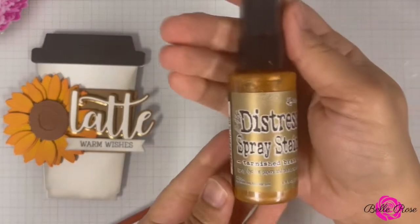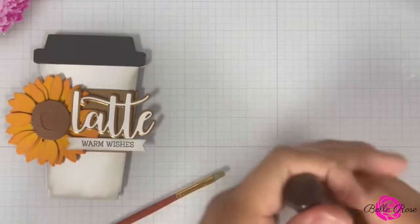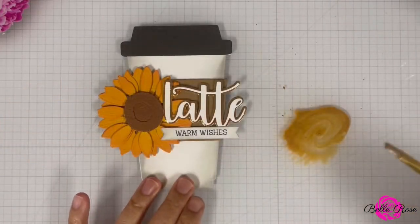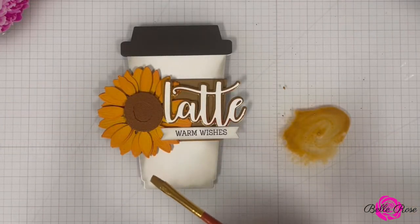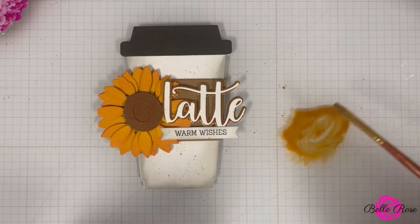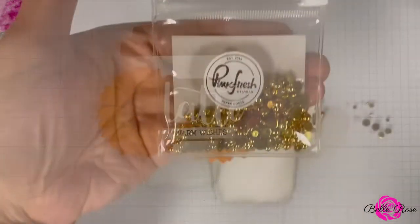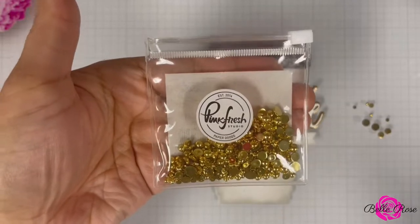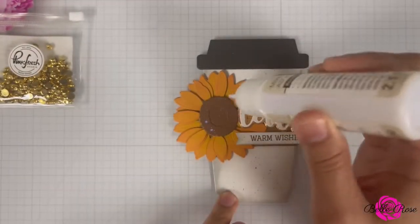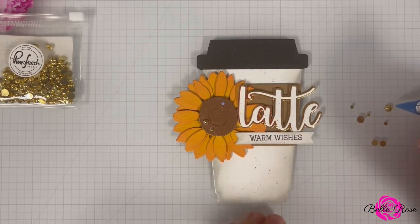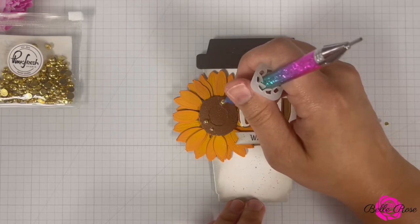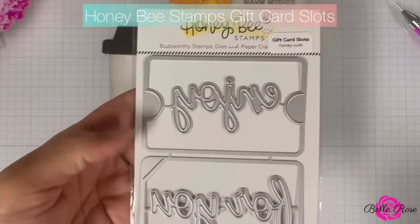This project would not be complete without some splatter. So I brought in Distressed Spray Stains Tarnished Brass and using my paintbrush, I'm going to tap it a few times to add some splatter to the front of the coffee cup. Next, I'm going to bring in some embellishments from Pinkfresh Studio and using adhesive glue and my jewel pick, I'm going to adhere them to the center of the sunflower.